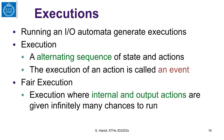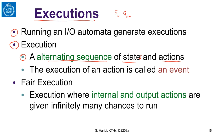Given this definition of automaton, what is an execution? Running an input-output automaton generates an execution. An execution is an alternating sequence of states and actions, as in a labeled state transition system. A system can be in state Si, performs action A(i+1), moves to S(i+1), performs another action A(i+2), moves to S(i+2), and so on. This sequence is called an execution.